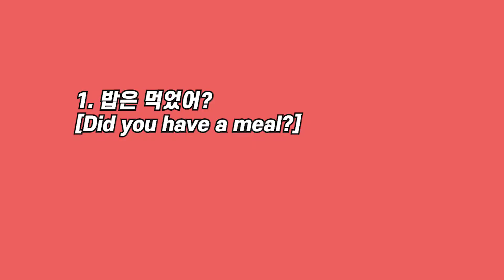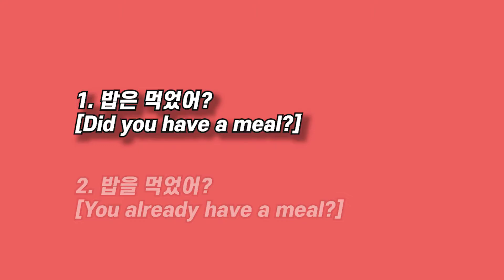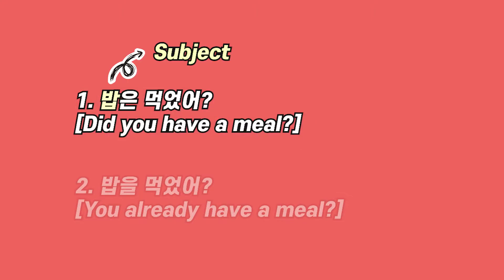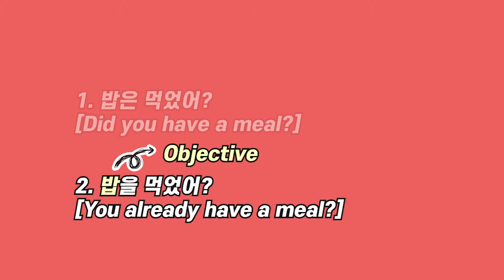For example, '밥은 먹었어?' versus '밥을 먹었어?' In the first sentence, 밥, which means meal in Korean, is the subject — meaning 'Did you have a meal?' In the second sentence, 밥 is the object, which means 'Did you already have a meal?' — and that contains a little bit of surprise. Those are slightly different nuances.